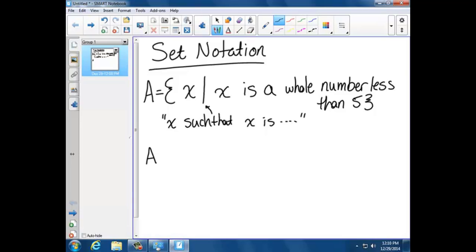Another way we can write what A is would be all the elements in that set. So it would include 0, 1, 2, 3, and 4. We wouldn't include 5 because it's saying less than 5.